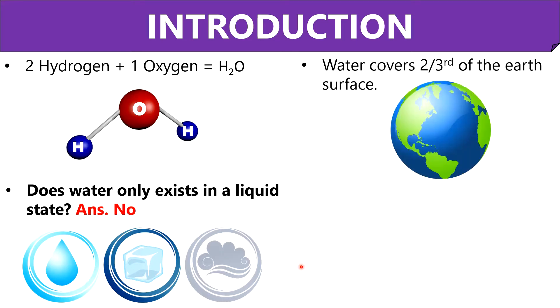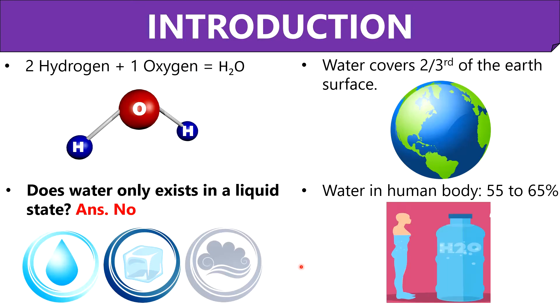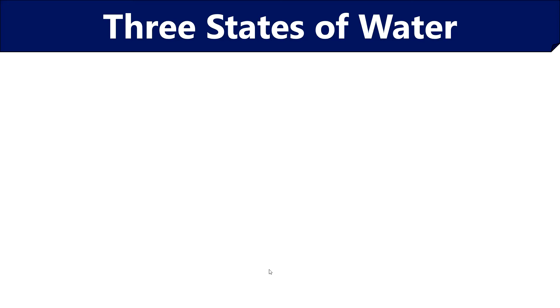Do you know why earth is known as the blue planet? It is because 71% of the earth's surface is covered with water. Another interesting feature is that 60% of the human body is water and every cell, tissue and organ of our body needs water to perform important functions like digestion, regulation of body temperature like sweating and respiration. Now we will discuss three states of water and their characteristic differences.